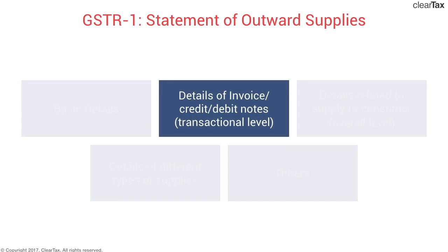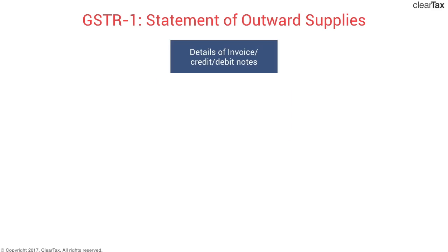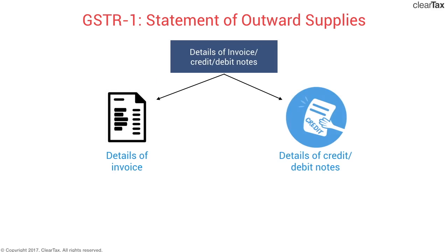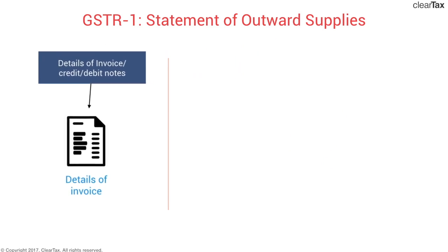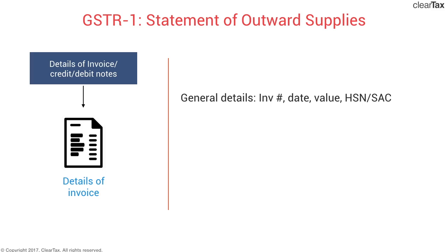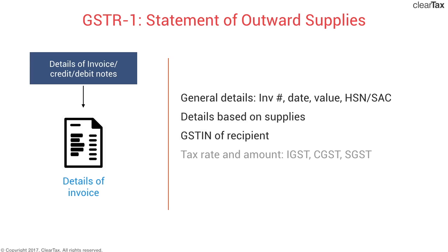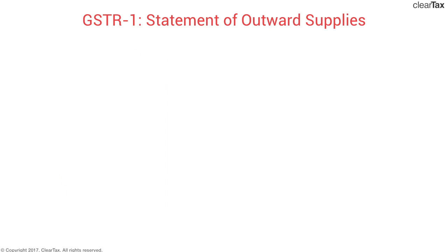Moving to the second category — details of invoices, credit notes, and debit notes at the transaction level. Starting with invoice details, these include general invoice details such as the invoice number, date of invoice, gross value, taxable value, and the HSN or SAC code. Details based on the type of supply include the GSTIN of the recipient and the tax rate and amount — IGST, CGST, and SGST.